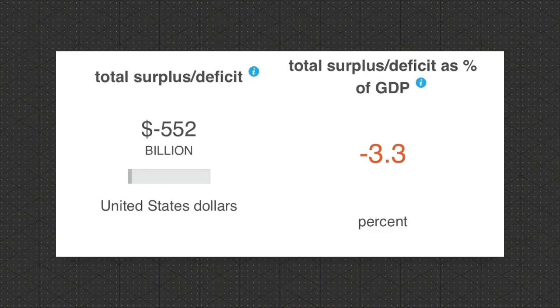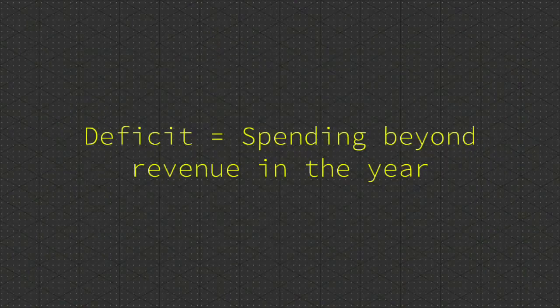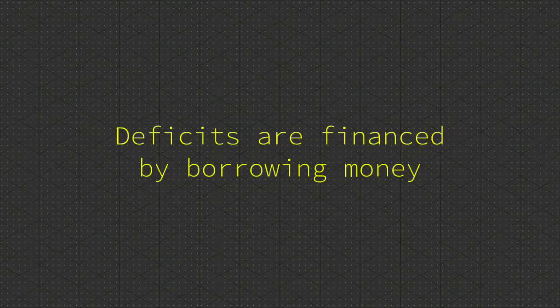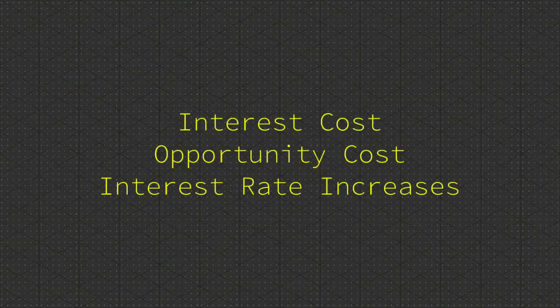This resulted in a budget deficit of five hundred and fifty two billion dollars, which alone was three point three percent of GDP. A budget deficit is how much the government spent that year beyond the revenue it received. Deficits have to be financed by borrowing money.